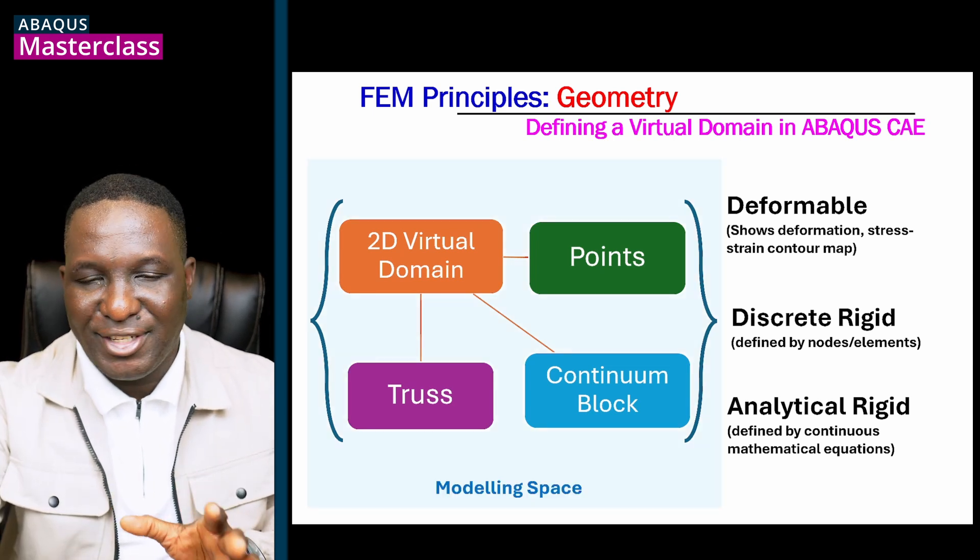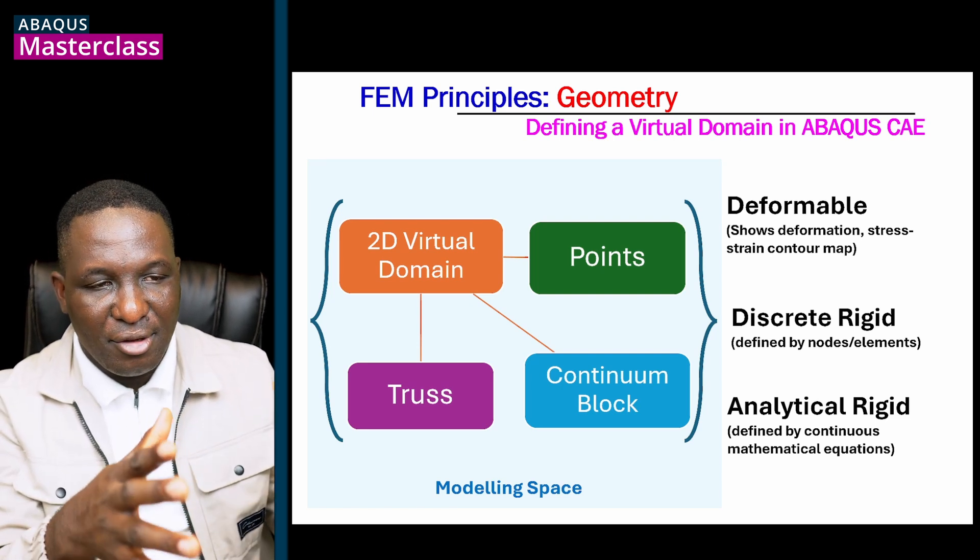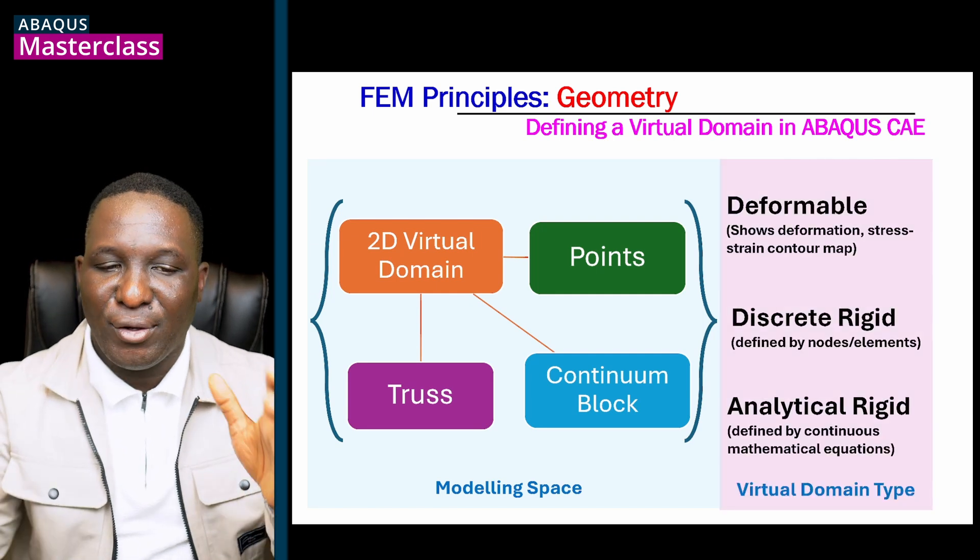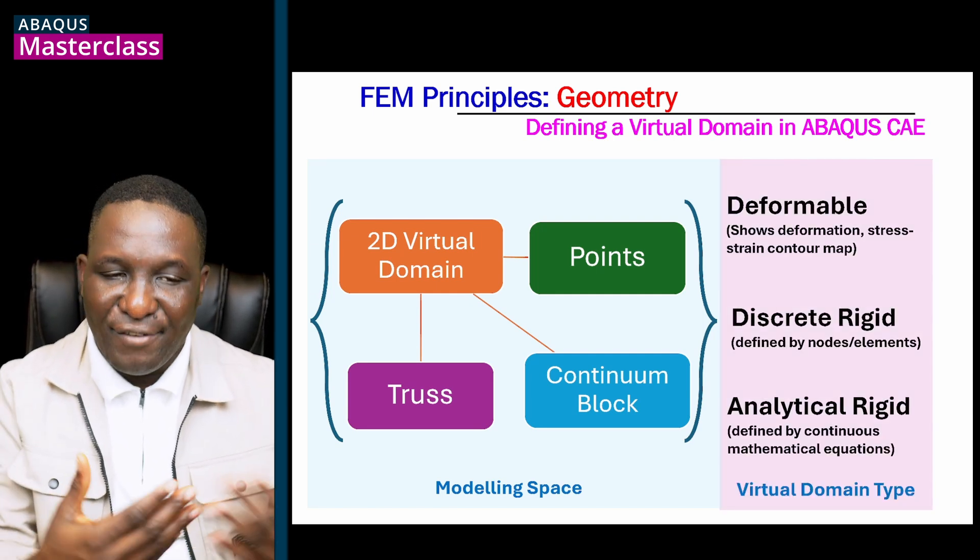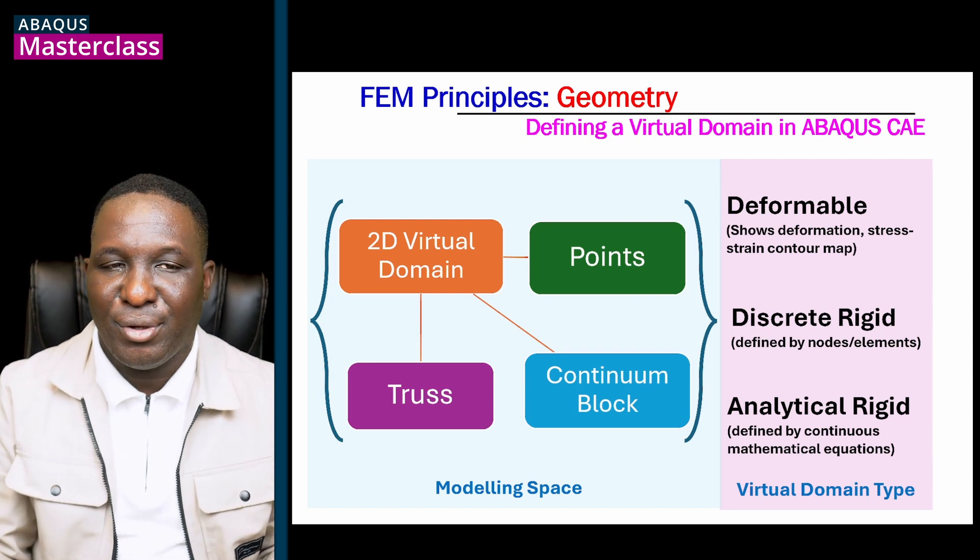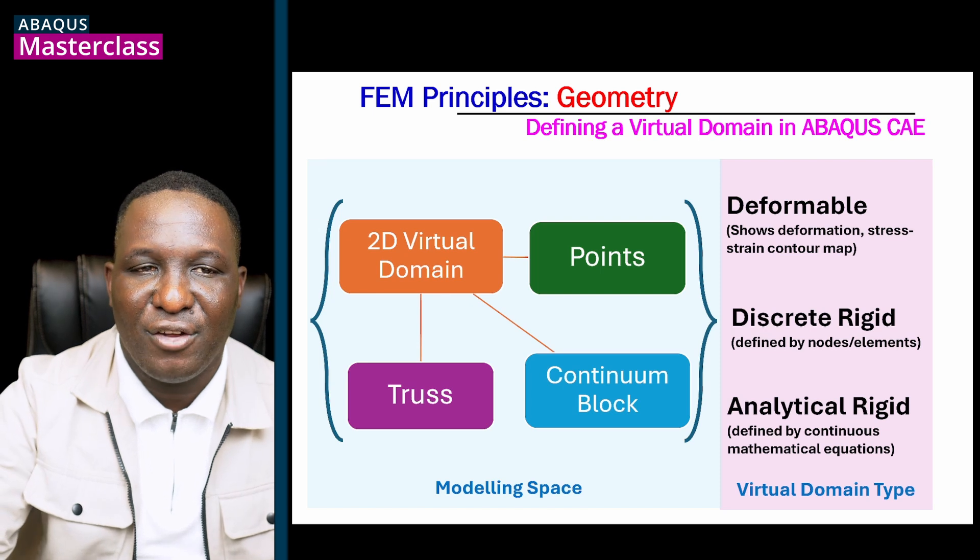So we then see two possible cases, a modeling space that can be 2D, consisting of points, trusses, or continuum blocks. And then you've got a virtual domain type, which that virtual domain could be deformable, could be discrete, it could be analytically rigid. And we need to bear that in mind. And once we get into ABAQUS, you begin to see this distinction very clearly.